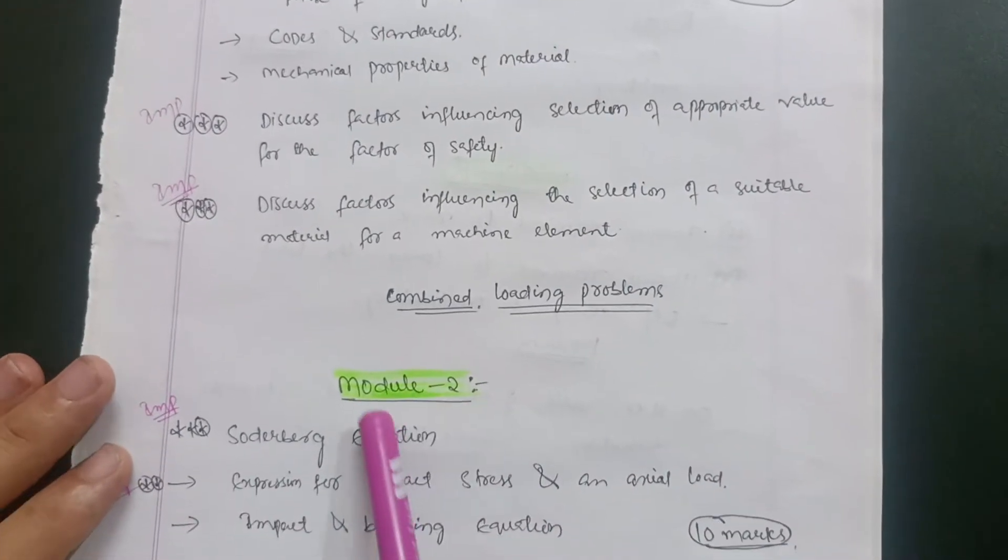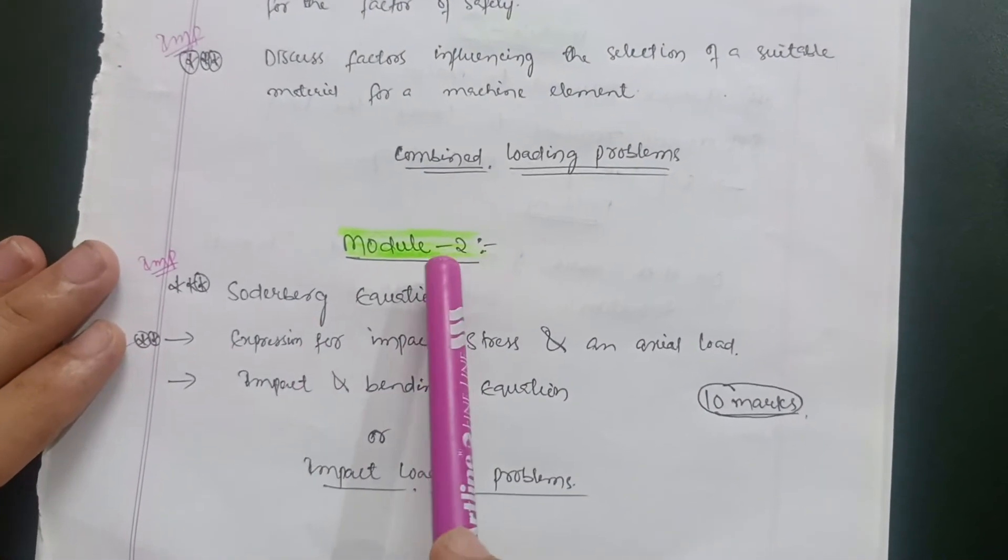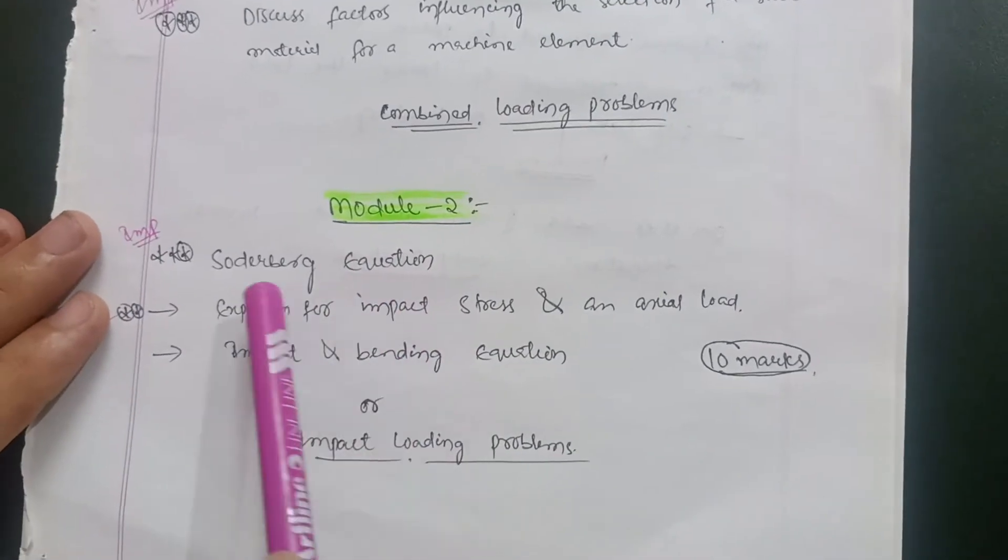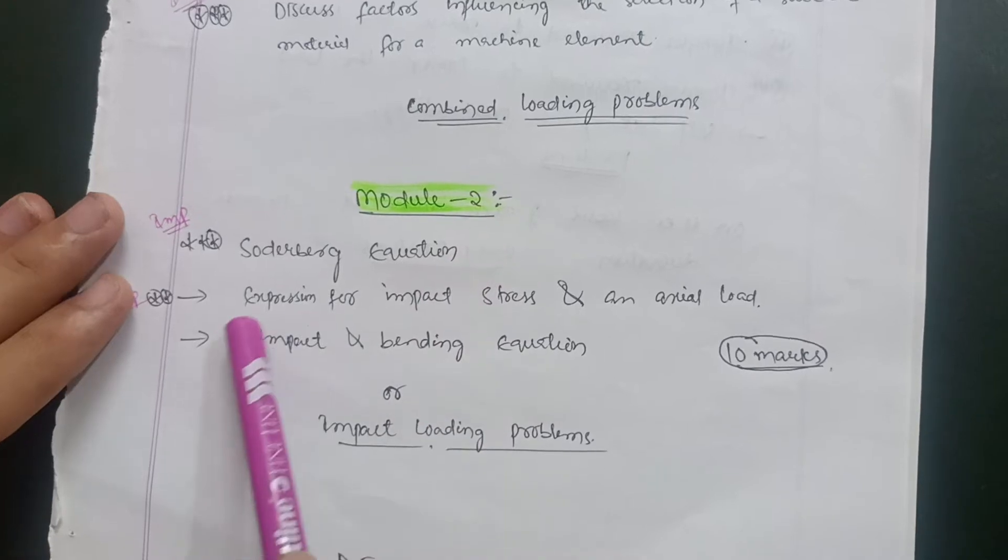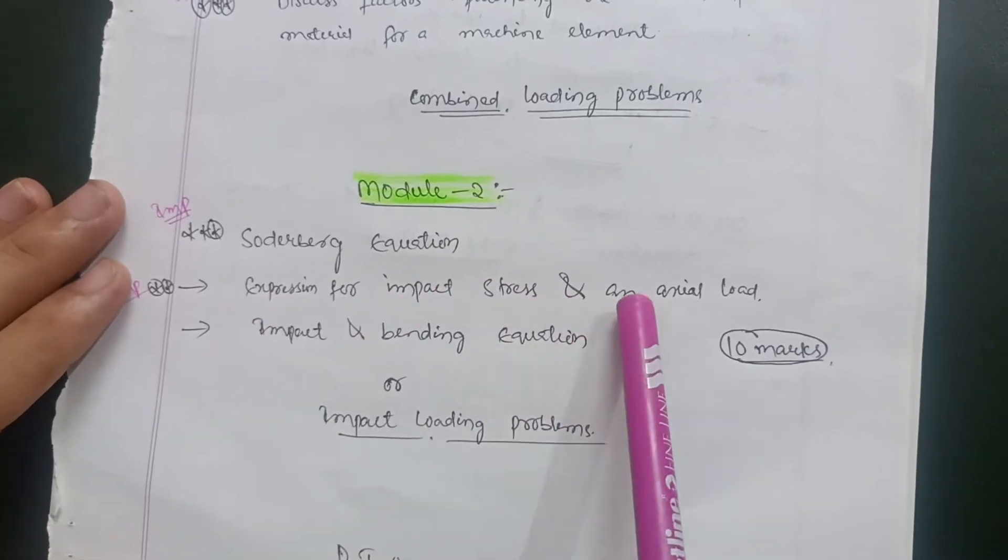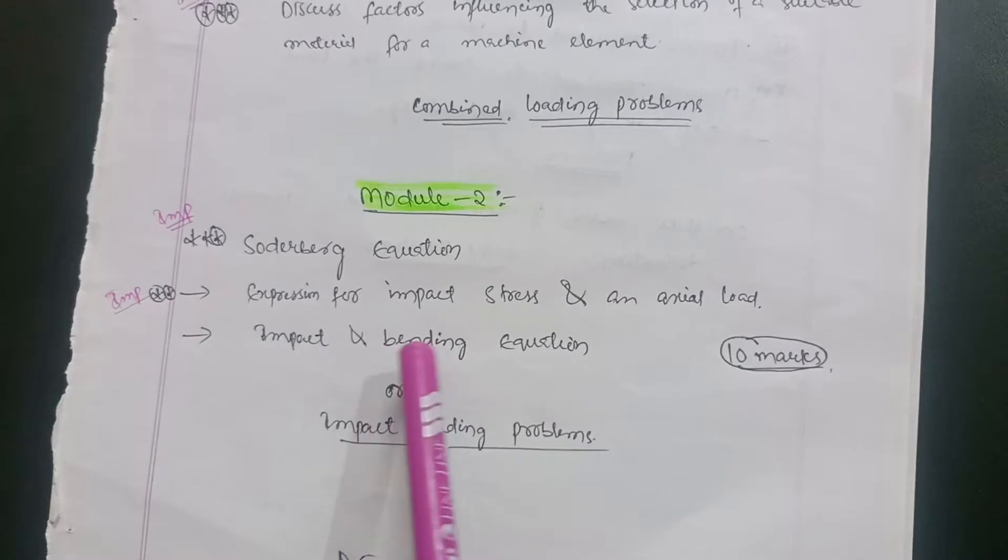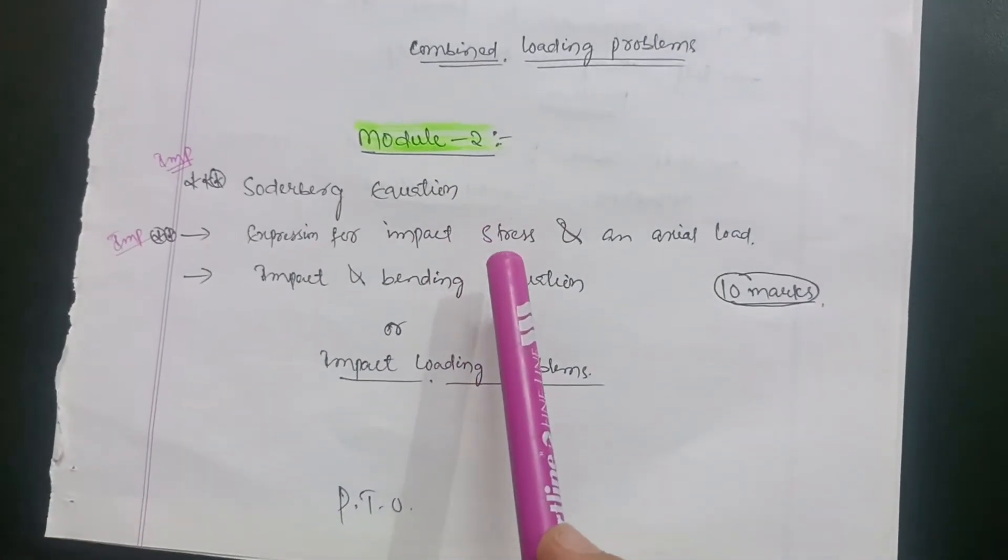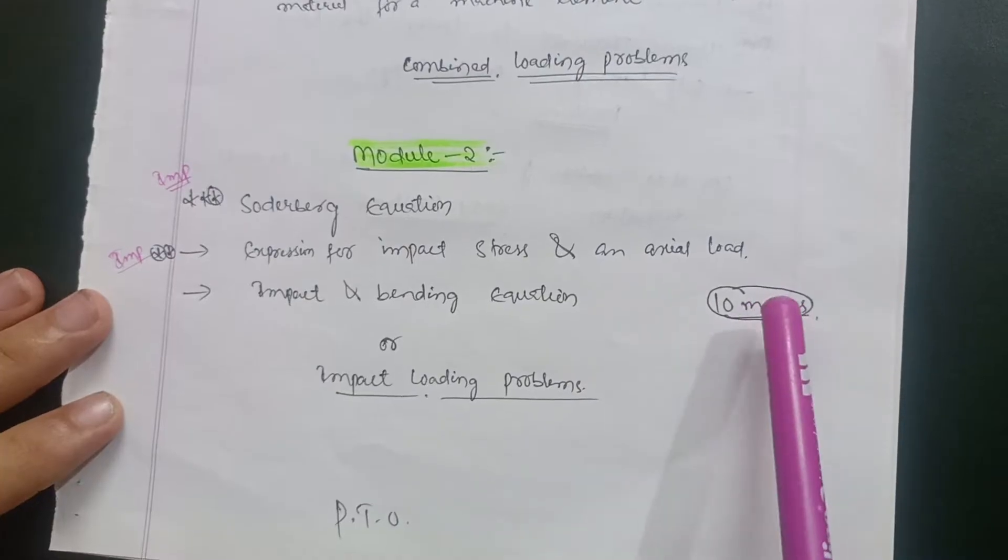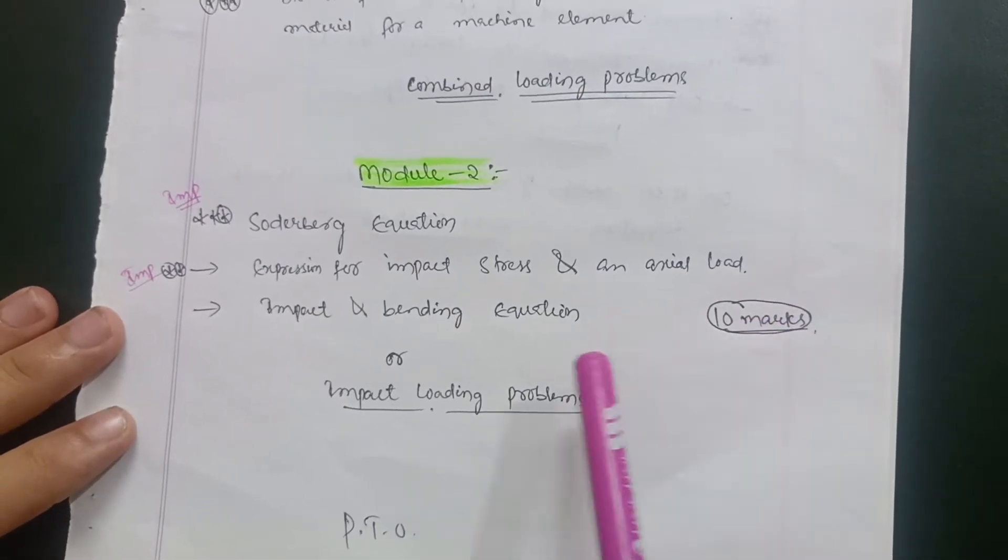In module 2, you just prepare three equations: derive the Soderberg equation, it is too much easy. Expression for impact stress in an axial load, it is also a derivation, and impact in bending equation. These three derivations if you are able to cover, then easily you will get 10 marks also in this particular module.